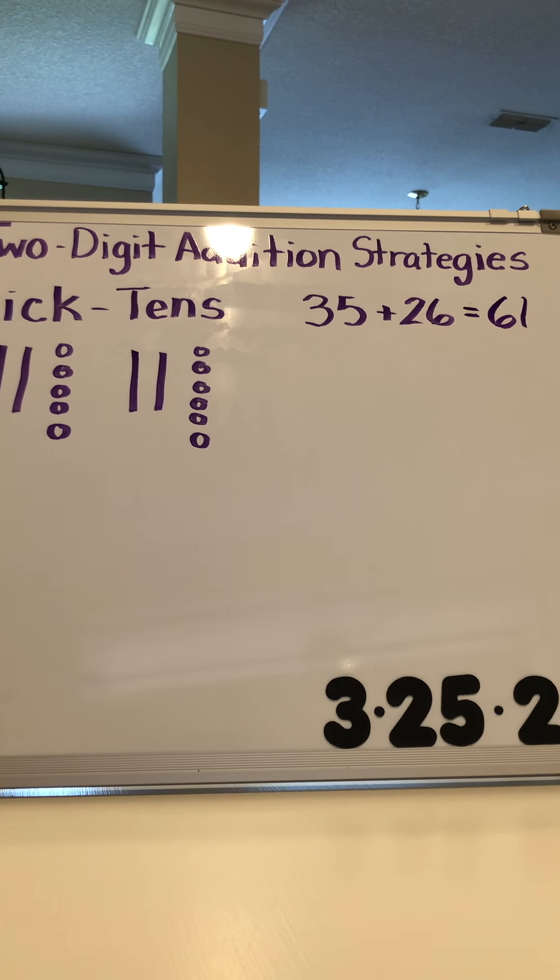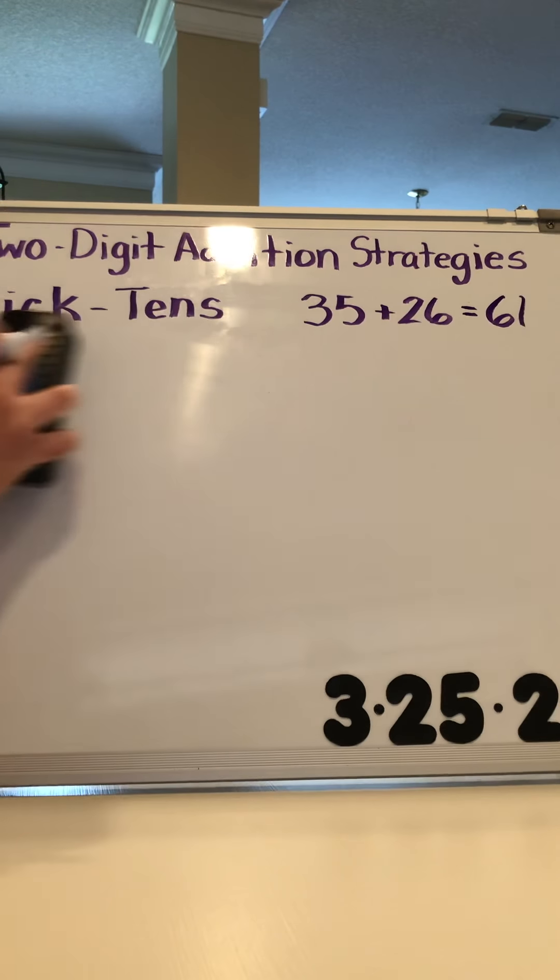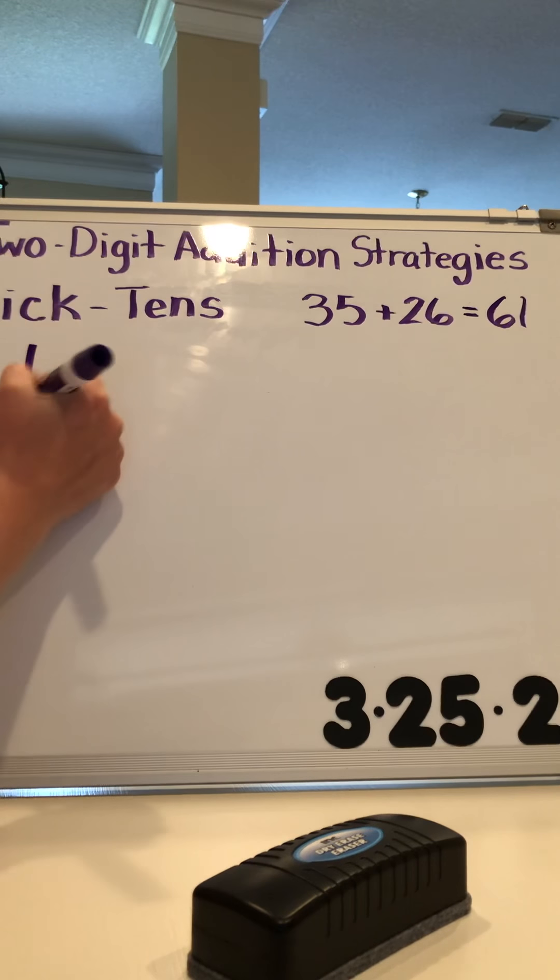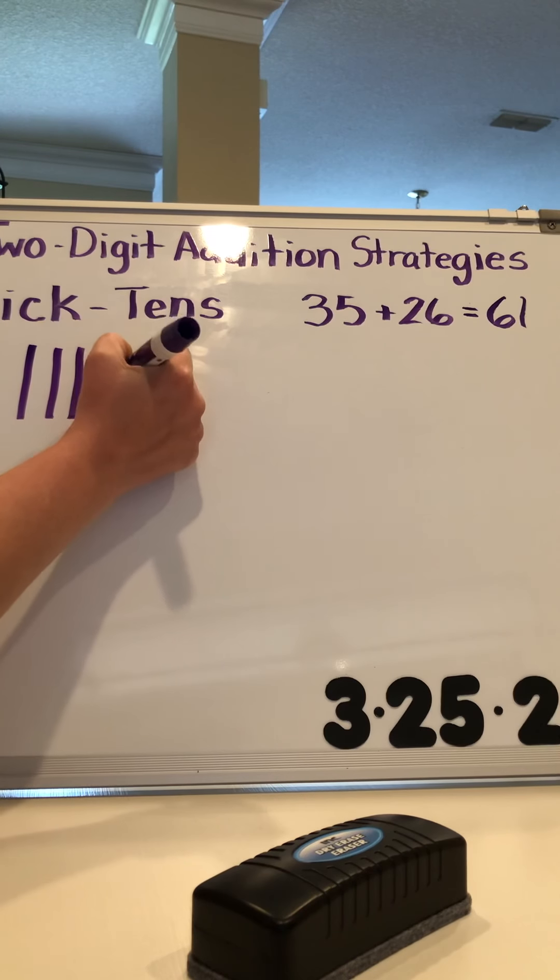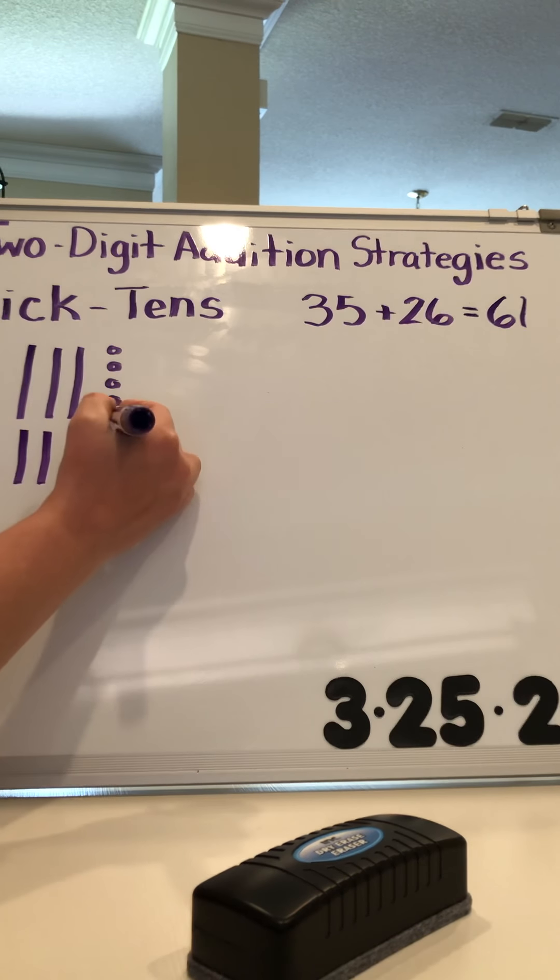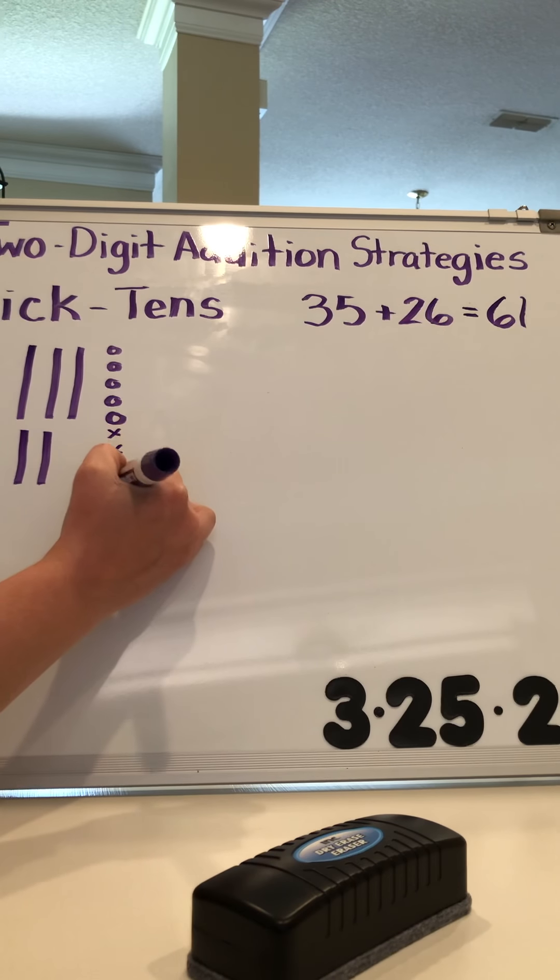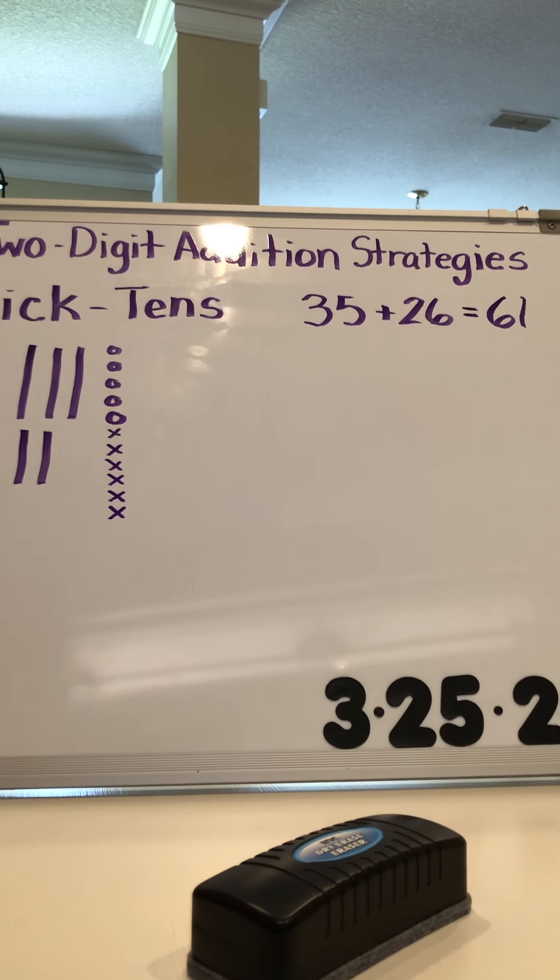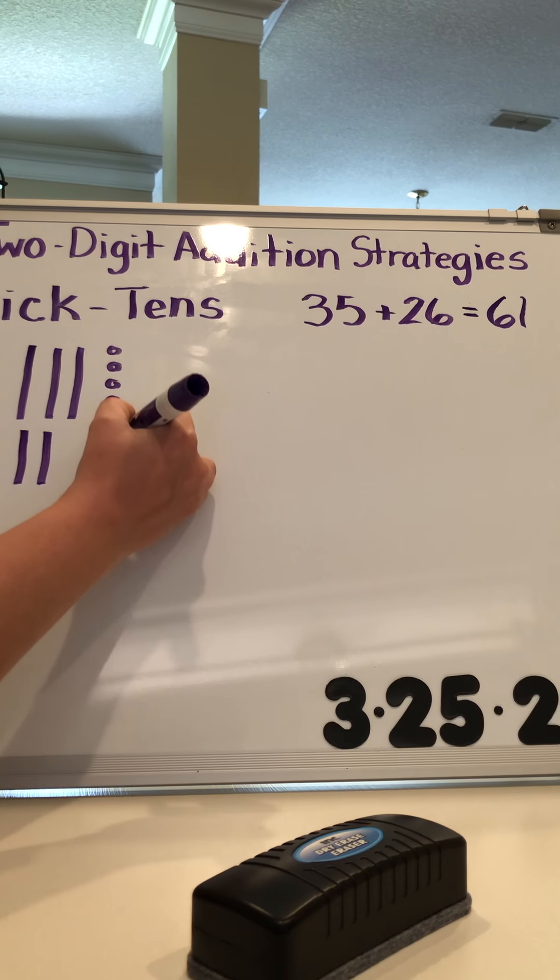There is another way to do the quick tens strategy. They will still draw the first number, but then they will draw the second number adding the ones to the ones from the first number. What this does is it allows us to see if we are able to make a brand new ten. And if we are, we can connect them. And then when we count our total amount it's easier to count because we have another ten available.